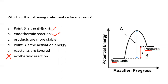Are the products more stable? Since the products are higher in energy than the reactants, the products are less stable. When the products are lower in energy than the reactants, the products are more stable — so that statement is incorrect. Point B is not the activation energy; point B is the delta H. Point A is the activation energy. Lastly, reactants are favored — this is correct because the reactants are lower in energy, making them more stable and more favored than the products.